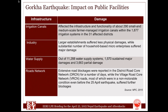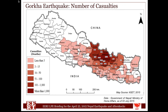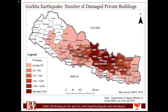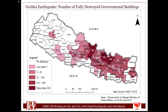Extensive damage to road networks in districts and villages was also caused by this earthquake, and several other facilities were also damaged moderately to heavily. Casualty and damage distribution is largely concentrated in a few districts around Kathmandu Valley. This shows the distribution of damage to private buildings in different districts — many districts around Kathmandu Valley have building damage exceeding 50,000 in a single district. Government building damage is also concentrated in a few districts around the central location of Kathmandu.